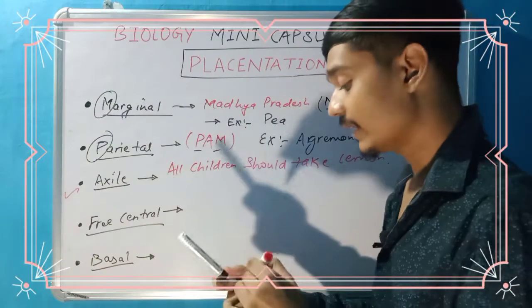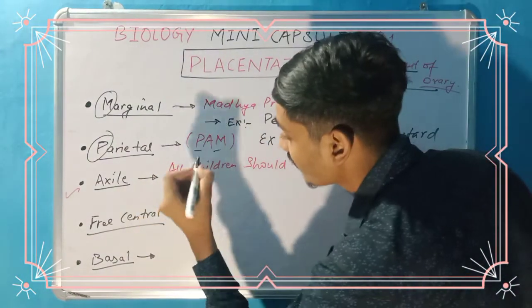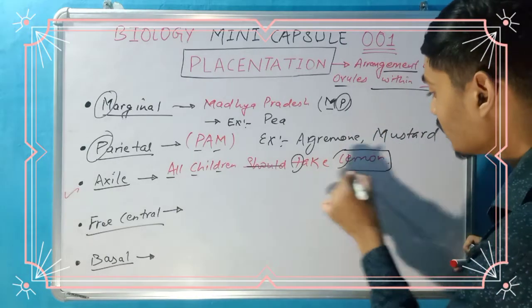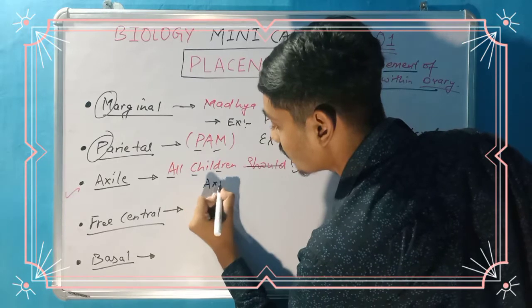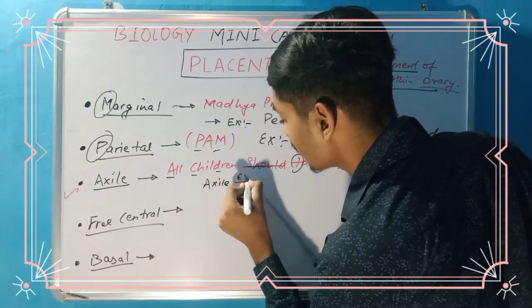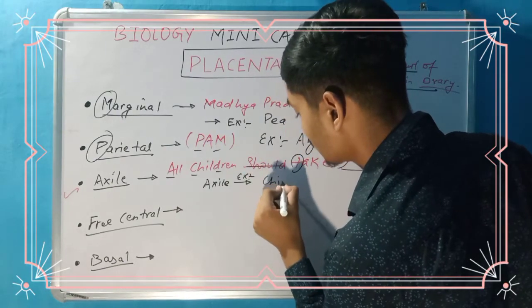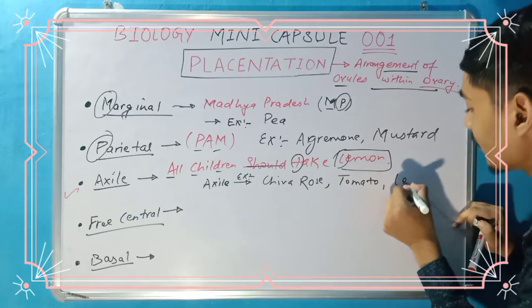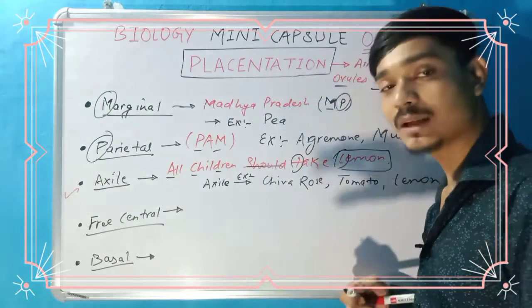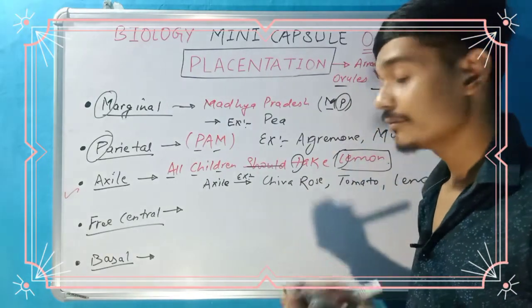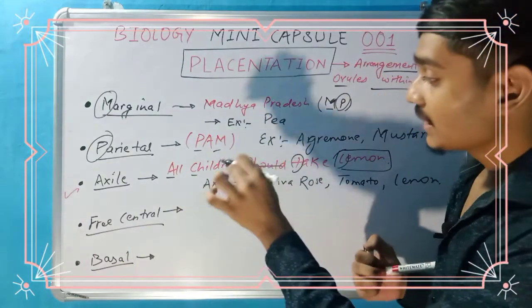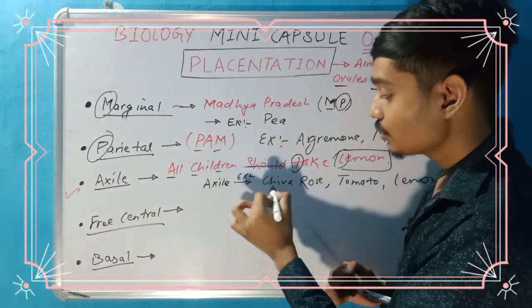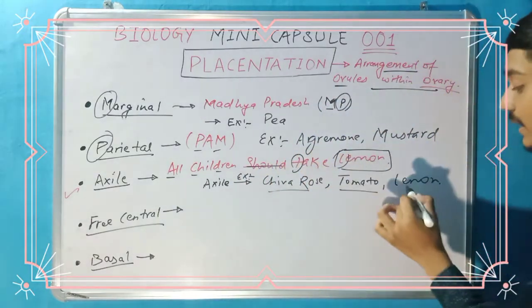And how it is helpful — here we have A, here we have CR, here we have T, and here we have the whole lemon. So A is for axile, CR is for China Rose, T is for tomato, and the whole lemon stands for lemon itself. So the mnemonic is: all children should take lemon. When we take lemon, we get vitamin C, which helps in building our immunity. So: A for axile, CR for China Rose, T for tomato, and lemon for lemon.